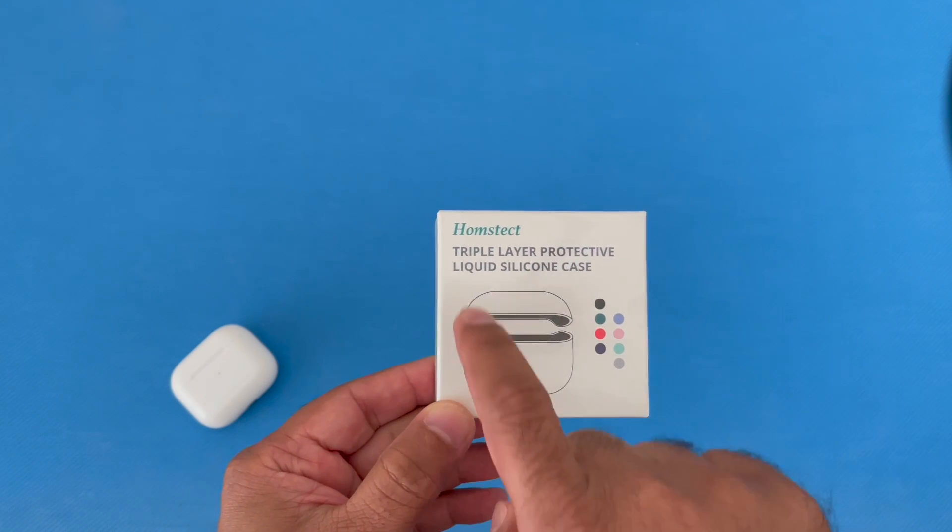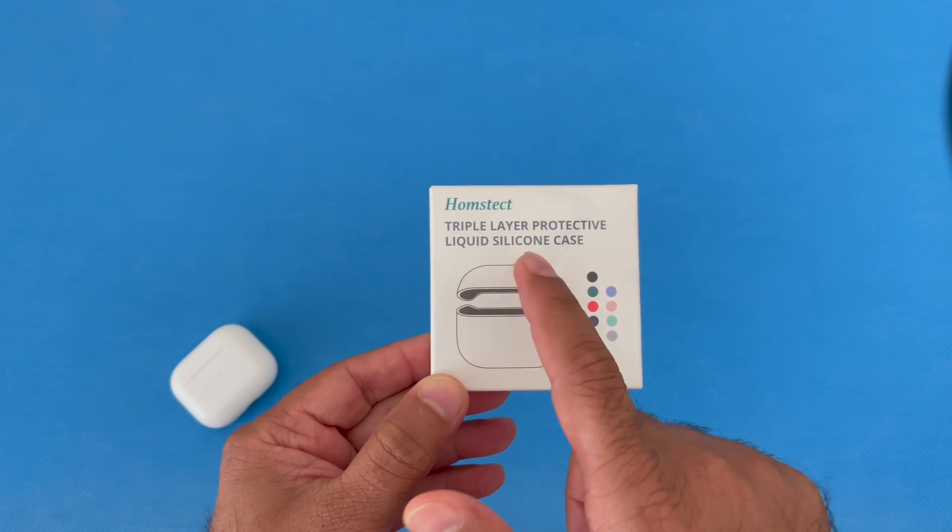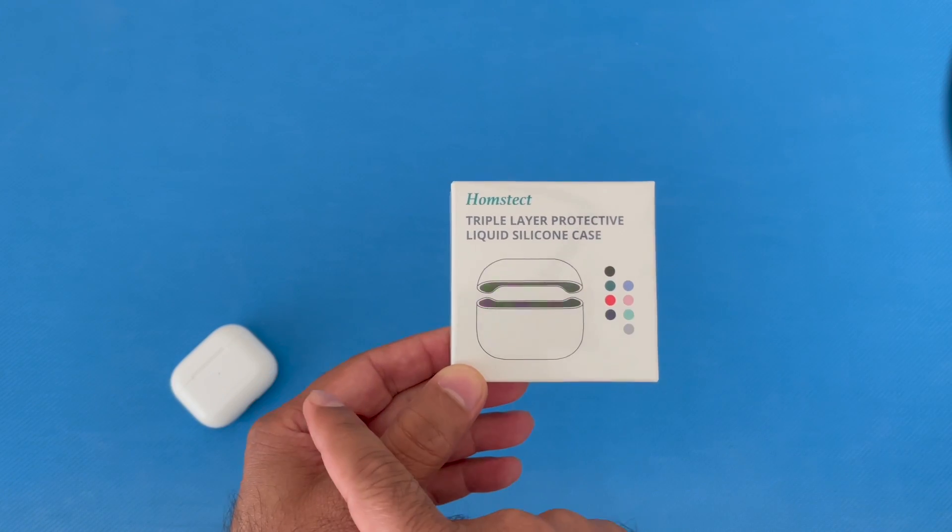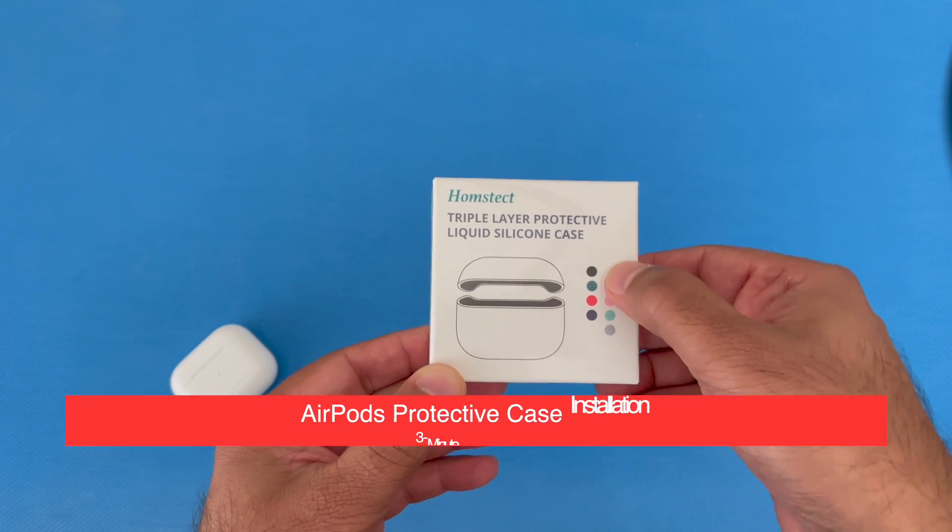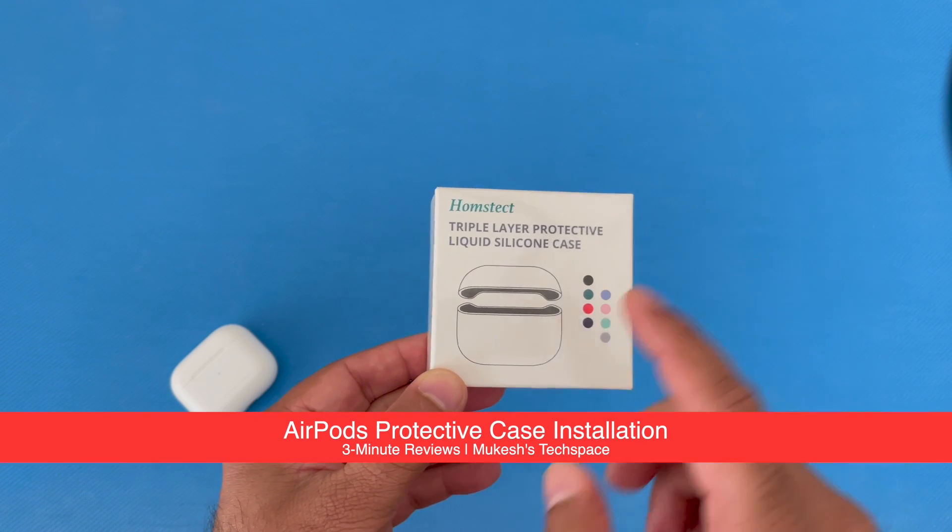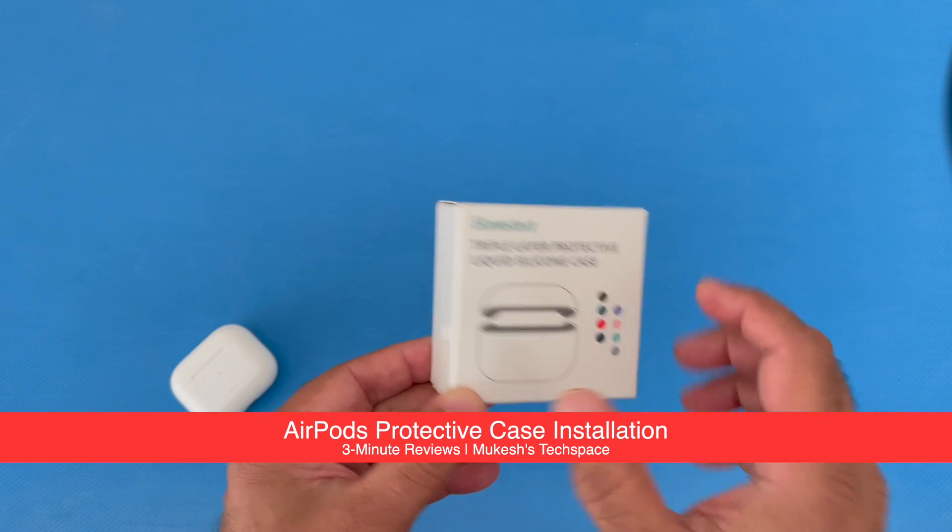This is the Homestek Triple Layer Protective Liquid Silicone Case for the AirPods 2. It comes in a variety of colors. The one that we have is the pink one.